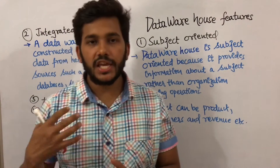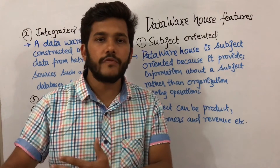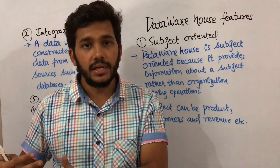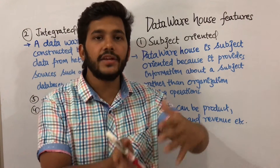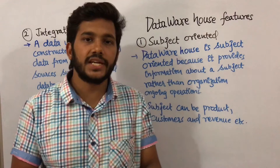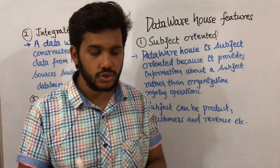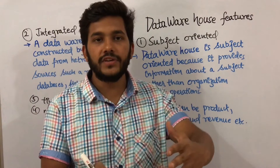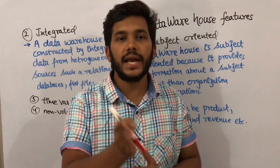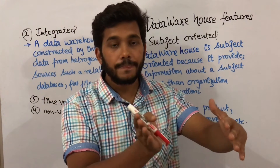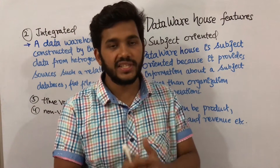For example, if the subject for a restaurant is customers, we can look at the total number of customers that visited. We can divide customers into different subjects, such as vegetarian customers and non-vegetarian customers, to see how many belong to each category.